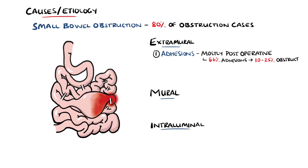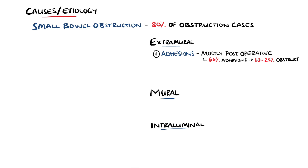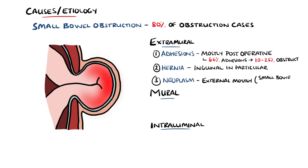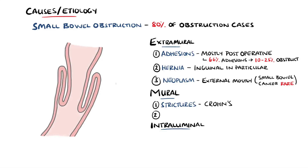Adhesions can also occur in some instances without surgery. Hernias are another common cause, in particular inguinal hernias. Neoplasm can also cause small bowel obstruction, but this is typically due to external compression rather than a cancer of the small bowel itself. Mural causes include inflammatory strictures, such as in Crohn's disease, and we may also see intussusception, which is where part of the bowel passes into a contiguous piece, like a telescope.